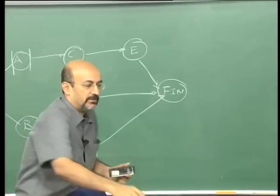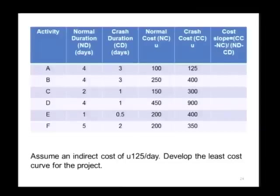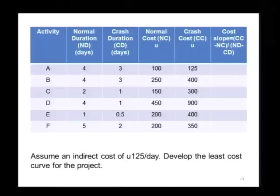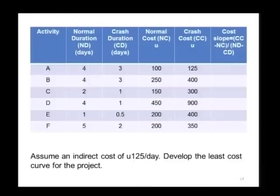I am going to now give you this as an example. Here is the normal duration, the crash duration, normal cost, crash cost. You can assume an indirect cost of 125 per day. First do the exercise for a few minutes and then we will solve it on the board.